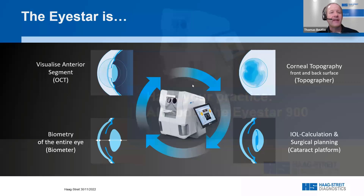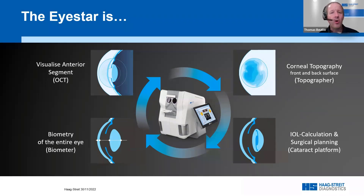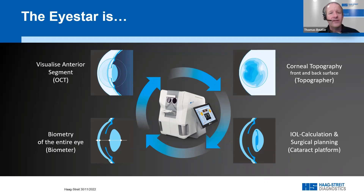Let's start with a little overview and see what the iStar is. The iStar is not just another biometer. On the Haag-Streit product plate you have the LensStar as the original optical biometer for the cataract application, but the iStar goes far beyond that. The iStar is a swept-source OCT-based biometer, but also a corneal topographer and corneal and anterior chamber tomographer. It provides images of the anterior chamber with swept-source OCT and is combined with iSuite IOL, our well-known IOL calculation extension for the cataract application.